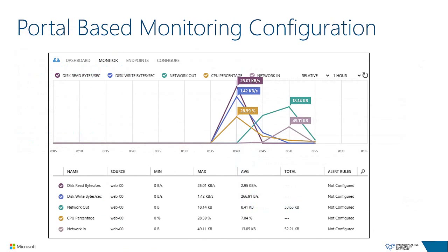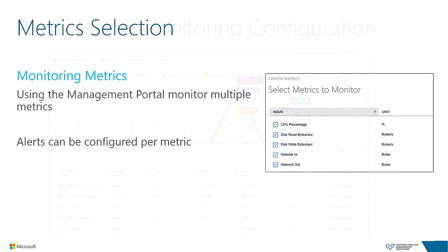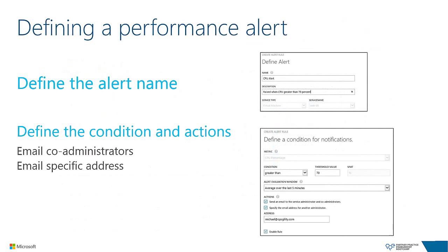When you open a virtual machine and switch to the Monitor tab, you can see a snapshot of the various performance metrics currently being collected. For virtual machines, you can select the metrics most applicable to your workload and trigger alerts per monitored metric. Defining a performance alert is simple — define the alert name and a brief description, then define the condition. You can choose a metric such as CPU utilization with a condition to trigger when greater than 70% in a five-minute evaluation window.